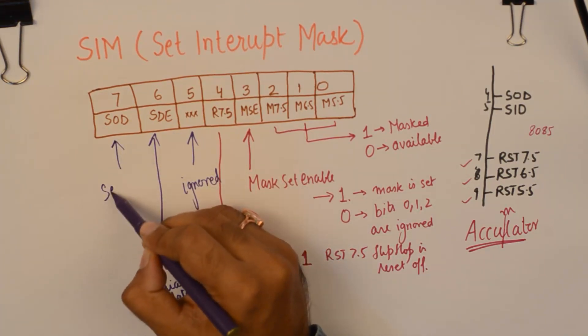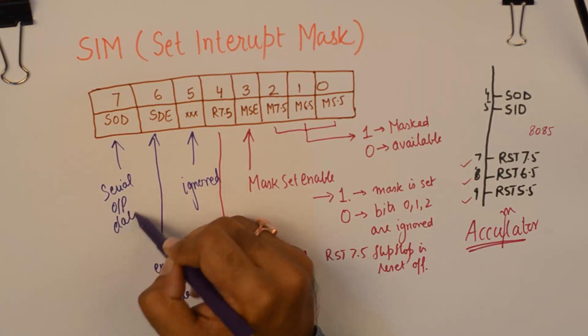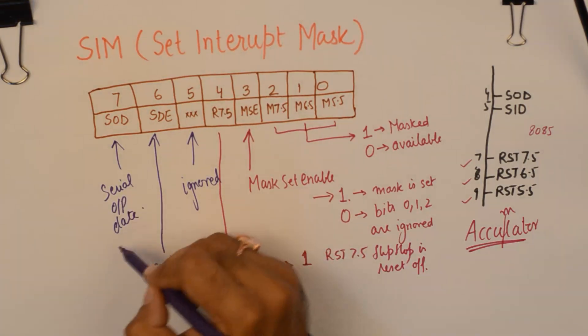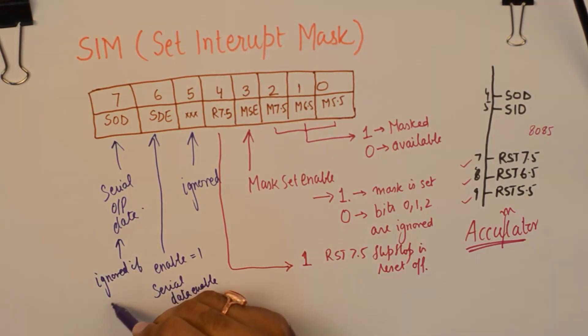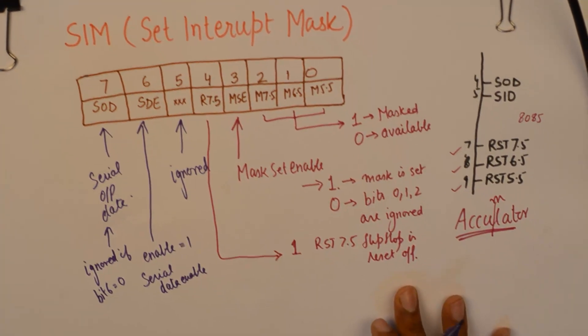And this bit will be ignored if the bit number 6 is 0. If this is not enabled, this would not work at all. I will give you an example of how this works.